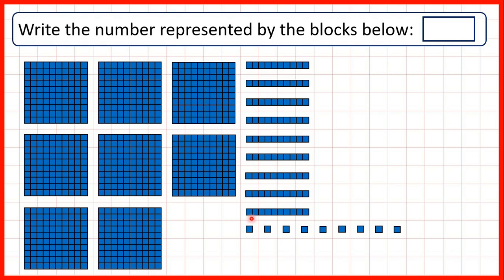We know that if we have ten ones, that's the same as having one ten. And for hundreds, if we have ten tens, that's the same as having one hundred. So if we imagine ten of these tens blocks all stuck next to each other, that's the same as having one hundred.